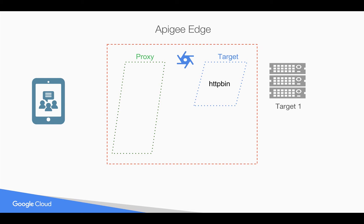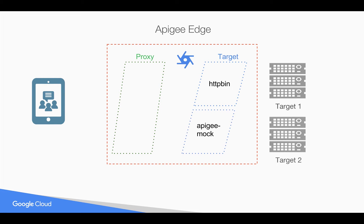For example, let's take HTTPbin. You can also have one more target server configured in Apigee as a target endpoint — for example, the Apigee mock target endpoint. Whenever a request comes to an API proxy, for example slash v1 slash mock, based on any parameter in the request or any custom logic, you can do routing to different target endpoints at runtime intelligently in Apigee Edge.